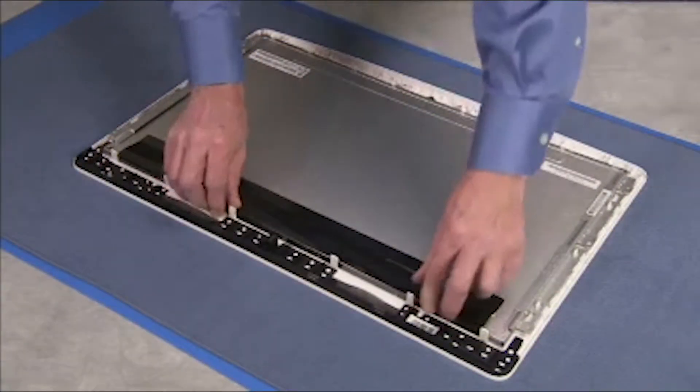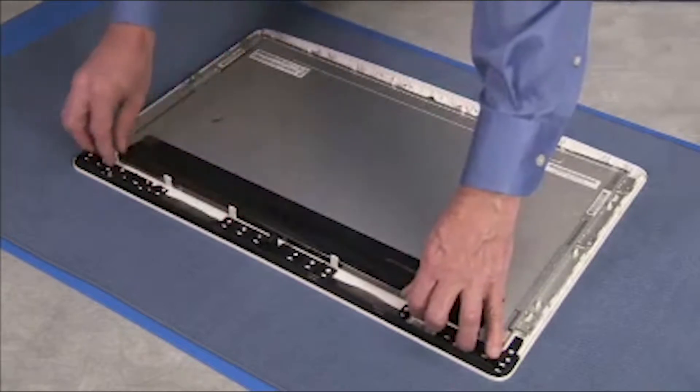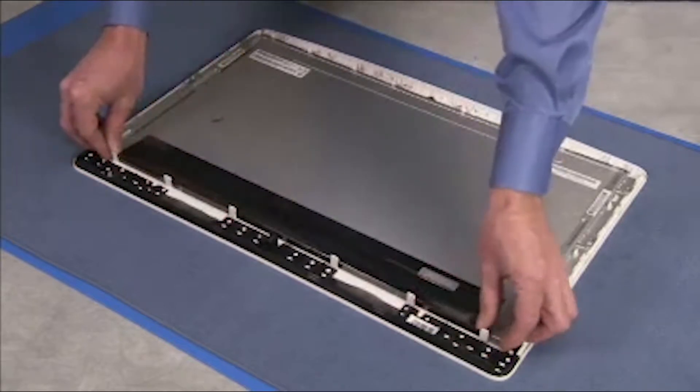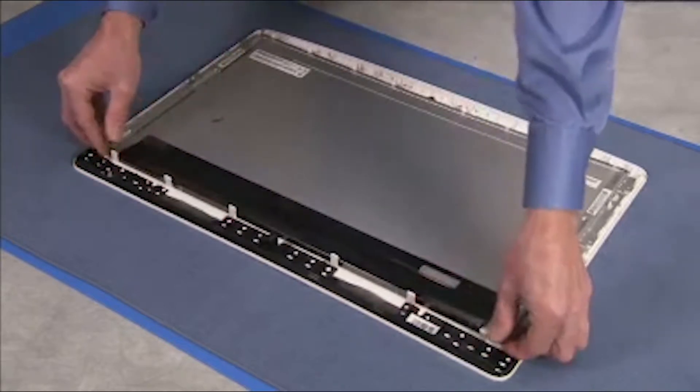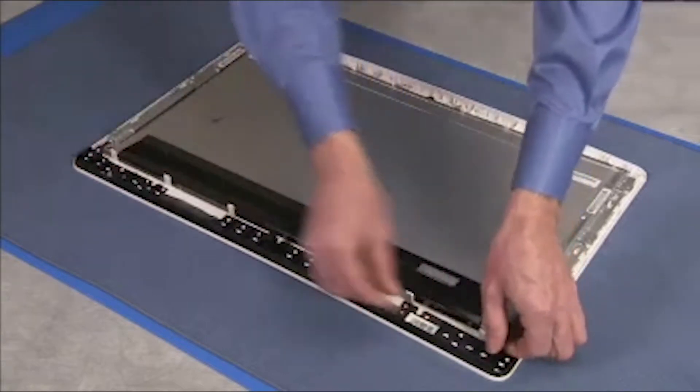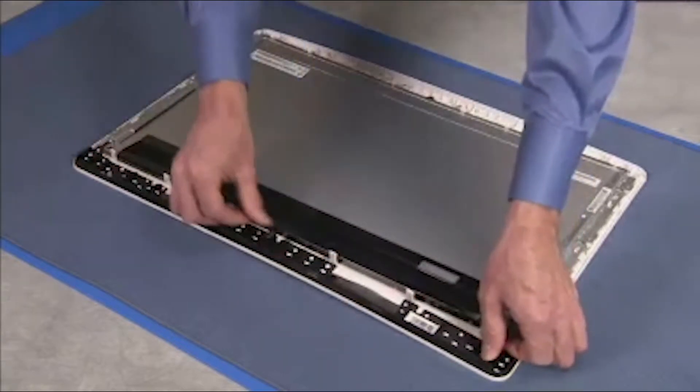Pry out on the small hooked tabs that help secure the front bezel to the panel. Firmly pull the panel away from the bezel. It is secured with double-sided tape and may require some force.